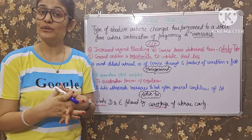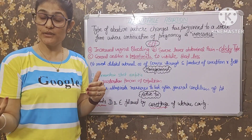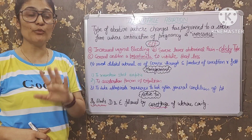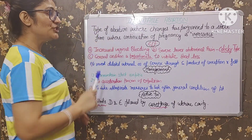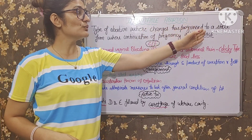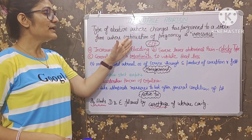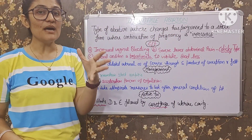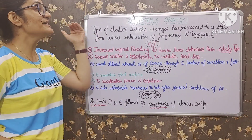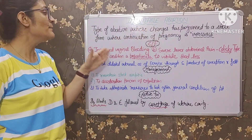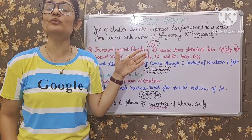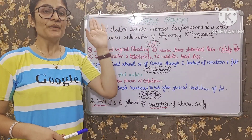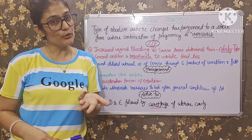Inevitable ka matlab kya hota hai? Inevitable matlab unavoidable — koi aisi cheez jisko aap avoid nahin kar sakte. So what happens in inevitable abortion? It's a type of abortion where the changes have progressed to a state from where continuation of pregnancy is impossible.